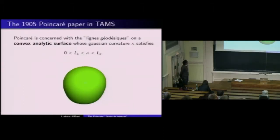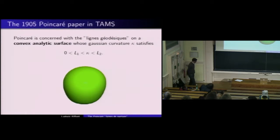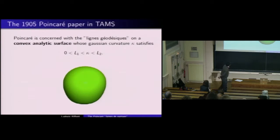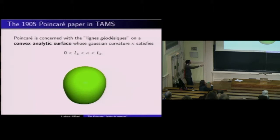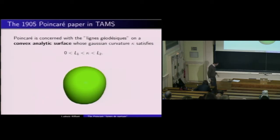Revenons à nos moutons. Ce dont je veux parler, c'est l'étude des lignes de partage faites par Poincaré sur les surfaces convexes. Poincaré se donne une surface analytique convexe qu'il suppose à courbure strictement positive — c'est-à-dire qu'en tout point le produit des courbures principales est strictement positif. On va étendre son étude à toute dimension, à ce qu'on appelle les variétés riemanniennes.